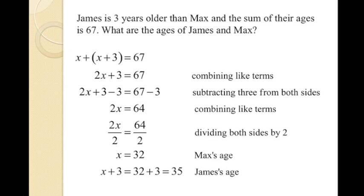To find both their ages, we solve for x. Combining the like terms and subtracting 3 from both sides gives 2x equals 64. Dividing both sides of the equation by 2 gives x equals 32. Substituting 32 back into the equation, we see that Max is 32 and James is 35. Check this by adding both ages to get 67.